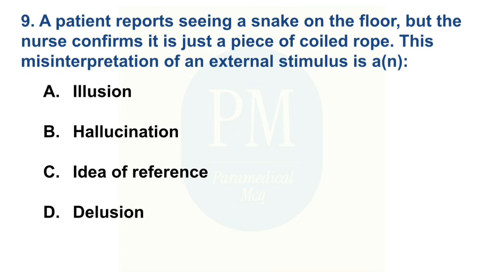A patient reports seeing a snake on the floor, but the nurse confirms it is just a piece of coiled rope. This misinterpretation of an external stimulus is an: Option A: Illusion. Option B: Hallucination. Option C: Idea of reference. Option D: Delusion. The correct option is Option A: Illusion.